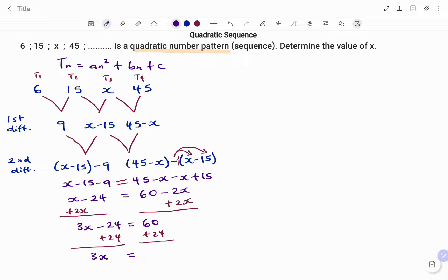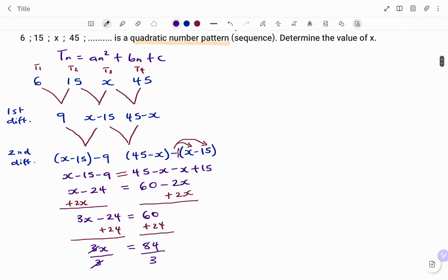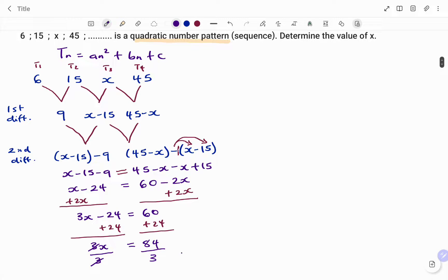And to find x, I will divide both sides by 3. And therefore, the value of x equals 84 divided by 3, which is 28. Thanks for watching, bye.